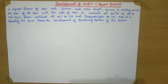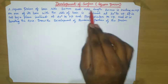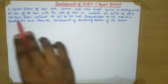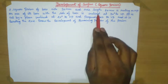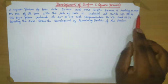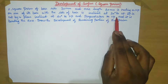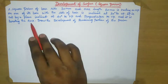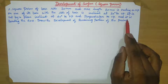Hello everyone, welcome to JazTalks. In this video, we are going to see how to draw the development of surface for the square prism in engineering drawing. So first read the question: A square prism of base side 30 mm, an axis length 60 mm is resting on one of its bases with the side of base inclined at 30 degrees to BP. It is cut by a plane inclined at 40 degrees to HP and perpendicular to BP. It is bisecting the axis. Draw the development of the remaining portion of the prism.